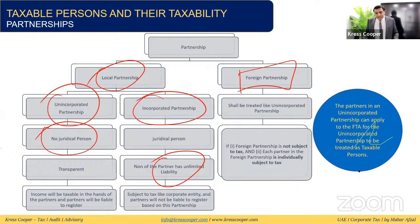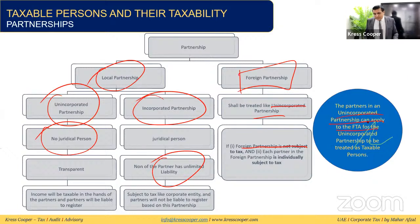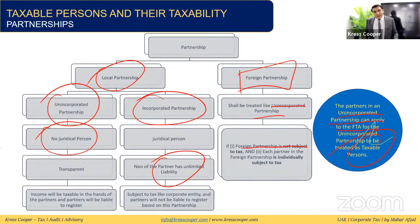For a foreign partnership to be treated as an unincorporated partnership, two conditions must be met: the foreign partnership itself is not subject to tax, and each partner is individually subject to tax. If these conditions are fulfilled, the foreign partnership is treated as unincorporated. Partners in an unincorporated partnership may also apply to the FTA to be treated as a taxable person, in which case the partnership submits the return and claims expenses as a separate juridical person.